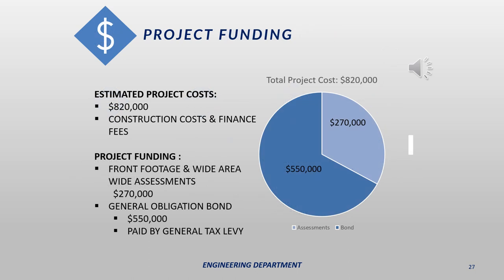When the city does projects like this, we typically get a lot of questions related to funding. We've estimated that the project will cost approximately $820,000, including all costs associated with construction and fees associated with financing the project. The funding comes from two sources: special assessments and general obligation bonds. Special assessments on this project will come in one type — front footage assessments — expected to generate approximately $270,000, roughly one-third of the project cost. The remaining $550,000, or roughly two-thirds, will be funded through general obligation bonds obtained on the open market and paid through the city's general tax levy fund.